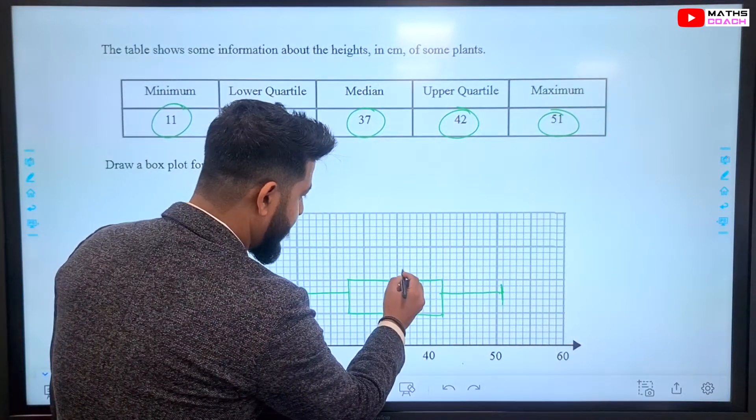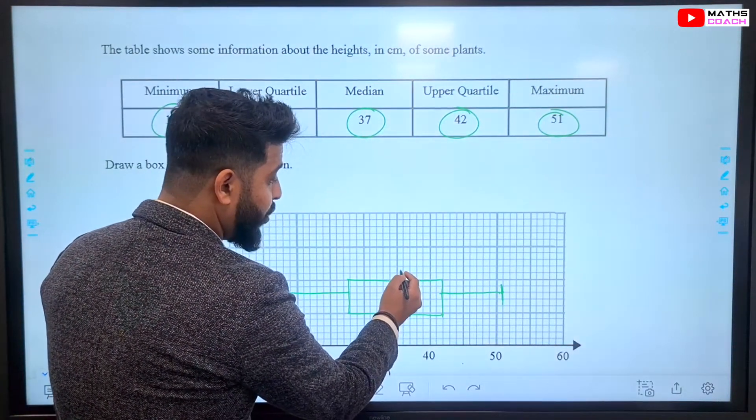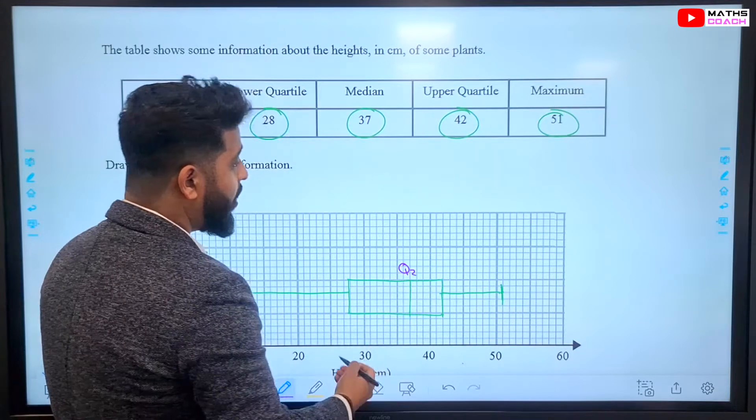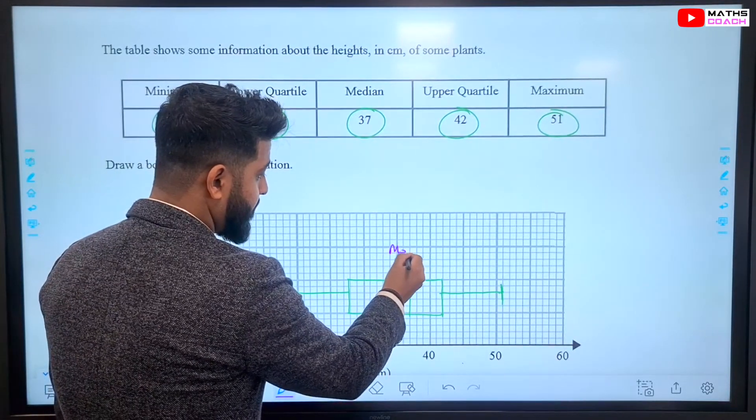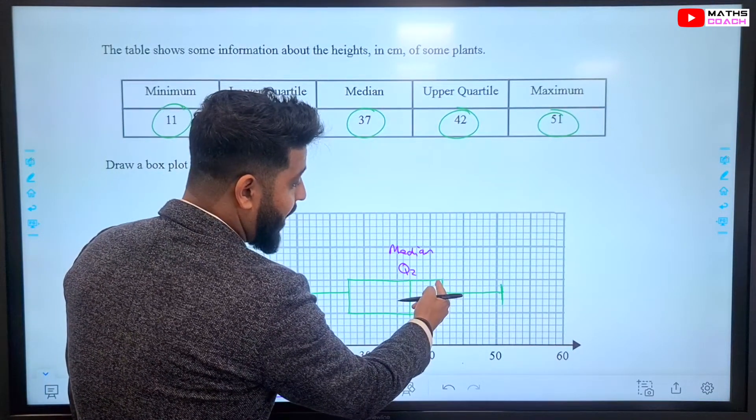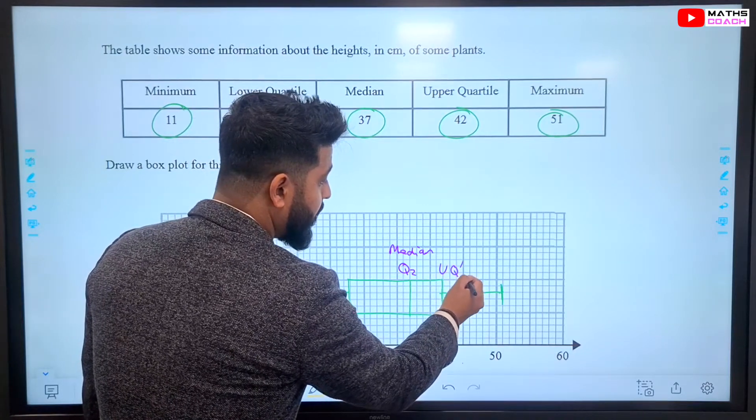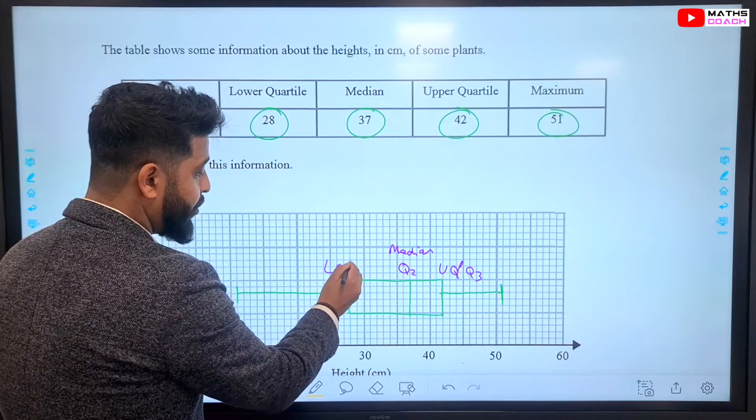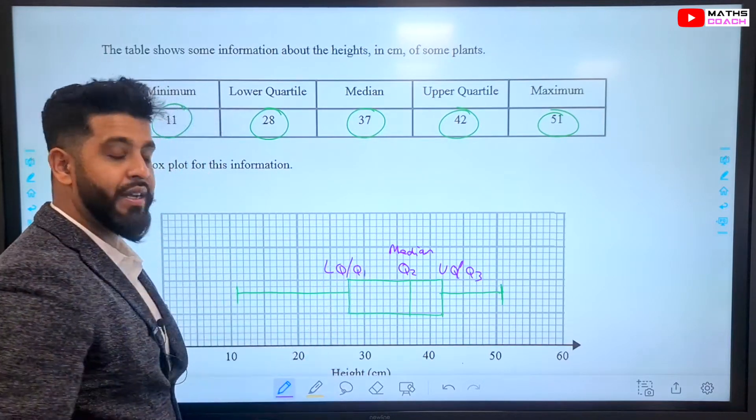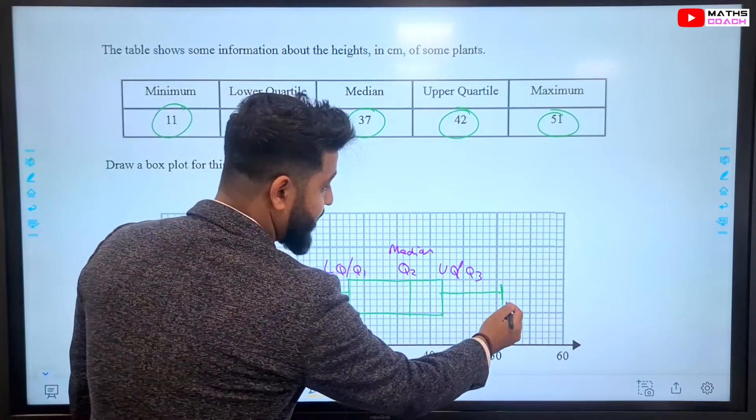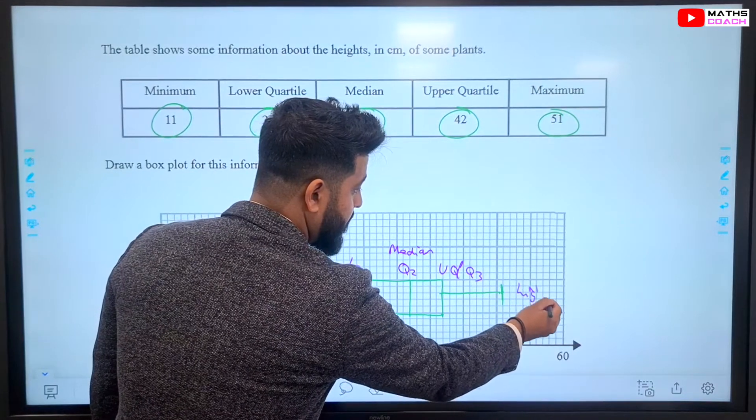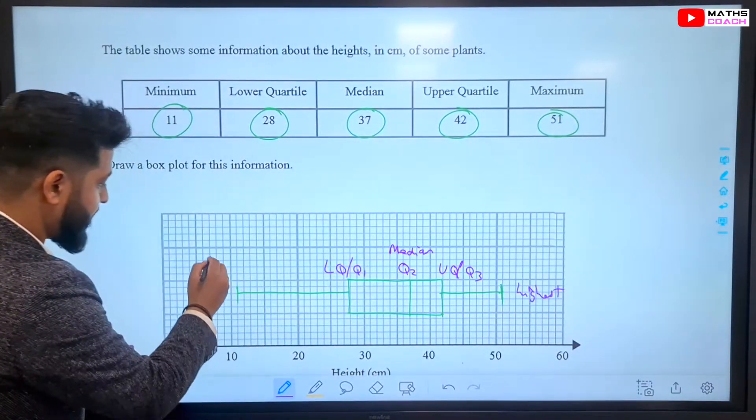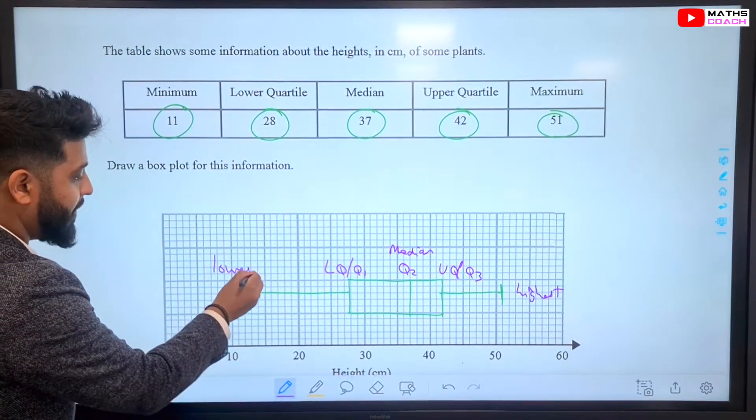Just to write down here. This is our median, which we can call Q2 or median itself. This is our upper quartile, which we can call UQ or Q3. And this is our lower quartile, LQ, or we can refer to it as Q1. And this is our highest value. And this is our lowest value or minimum value.